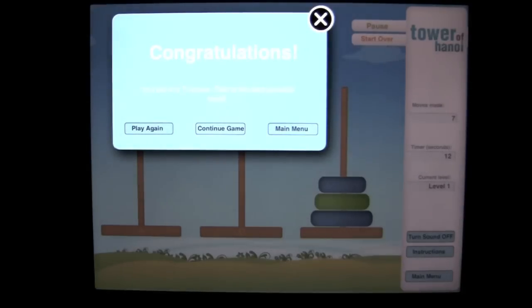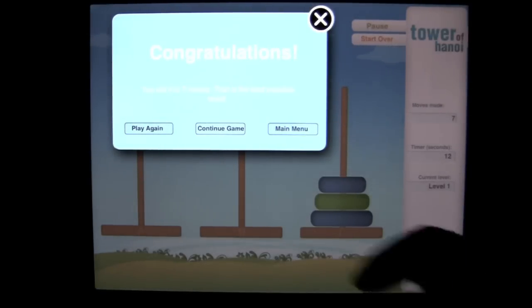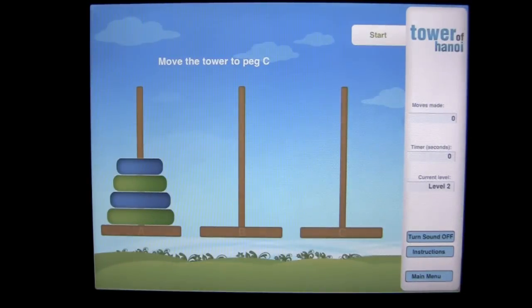We get the air horn and we get congratulations. It says you did it in seven moves. That is the best possible result. Now we can continue the game and it gets harder.